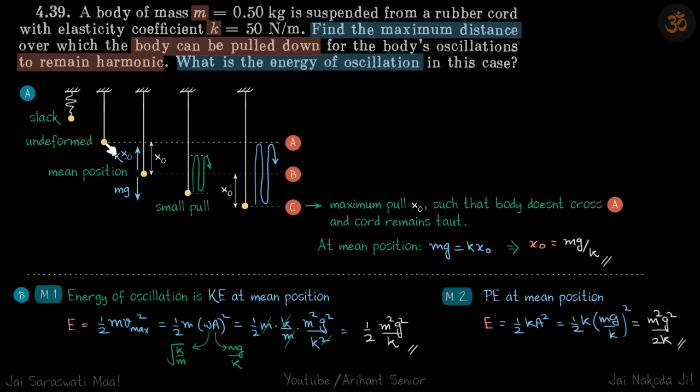If the mass goes above that, the string will become slack and then the motion will be free fall and no longer harmonic. For the motion to remain harmonic, the mass should not go beyond this position where it is undeformed. The maximum amount it can be pulled down should be same as x naught because whatever amount you pull down it will go the same amount up.